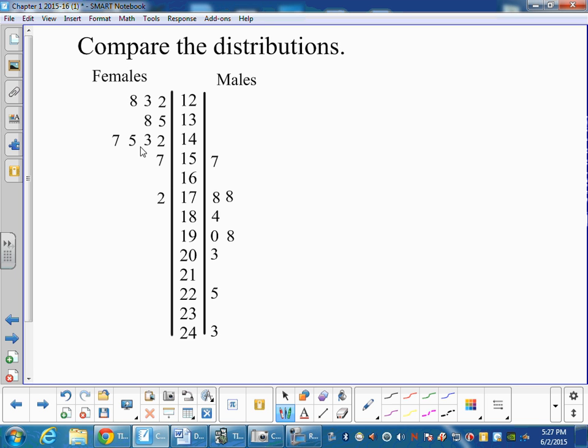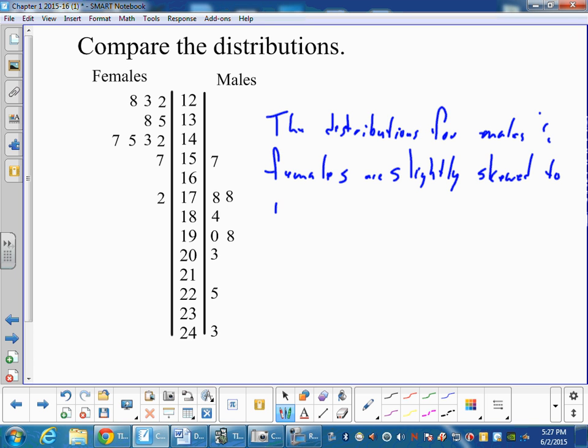And same with this one, it's kind of hard to tell the skew. So both distributions, we can say the distributions for males and females are slightly skewed to the right. Now we don't need a comparative word here because there's not a lot of variation there, so we can just say they're both skewed to the right.